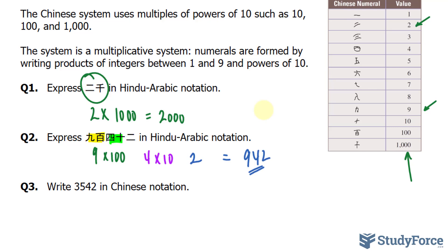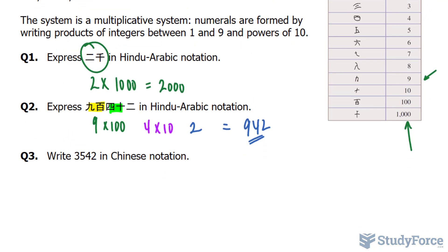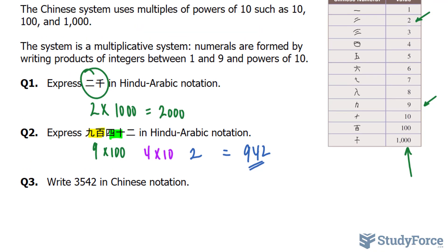Let's do one more question for good measure. In question number 3, they want us to write 3,542 in Chinese notation. No problem. We'll begin with this symbol that represents 3, and we'll need to multiply 3 by 1,000, shown right there.